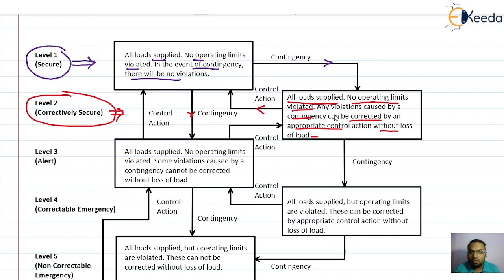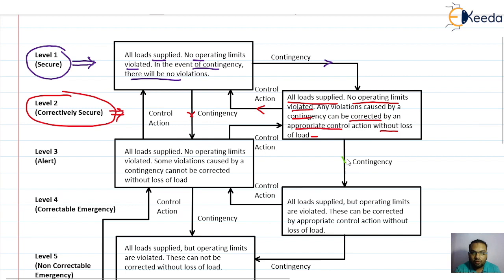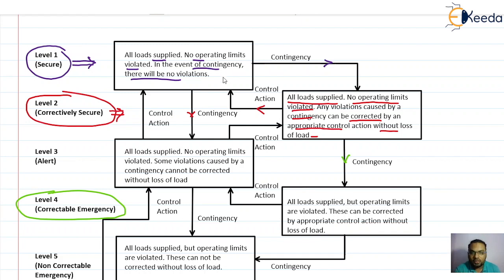If we don't take any corrective action and let our system continue to operate in level two — the correctively secure state — then if any further contingency comes, the system will enter into level four, which is a correctable emergency. But first, let us discuss what happens when the system goes from level one to level three.